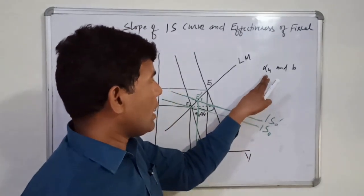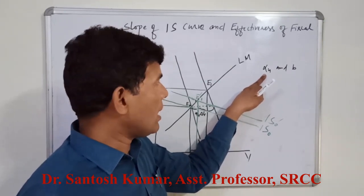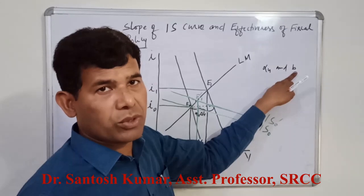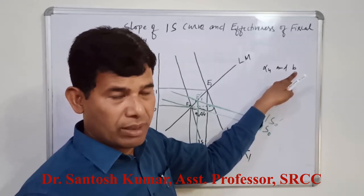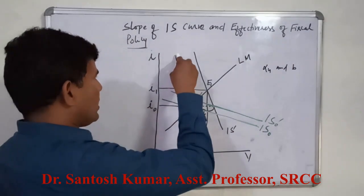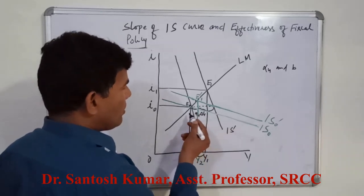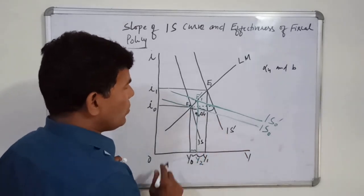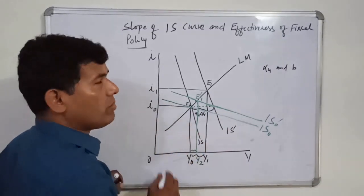To recall: given alpha G and B, we have a black-line IS curve. When government increases expenditure by delta G, the IS curve shifts rightward to IS prime by a horizontal distance of alpha G multiplied by delta G. We move from E0 to E1, giving a new equilibrium income Y1 and interest rate I1. This shows the effectiveness of fiscal policy when the slope of the IS curve is higher.